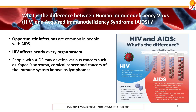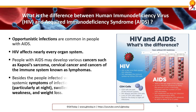AIDS affects every organ, and cancers such as Kaposi's sarcoma, cervical cancer, and cancers of the immune system also known as lymphomas are common. Besides this, people infected with AIDS often have systemic symptoms of infection like fever, sweats particularly at night, swollen glands, chills, weakness and weight loss.